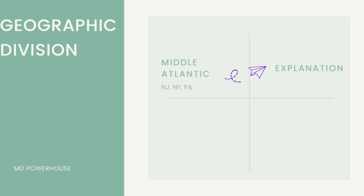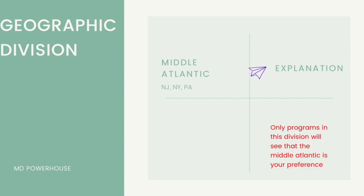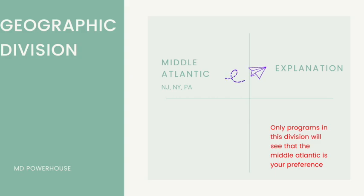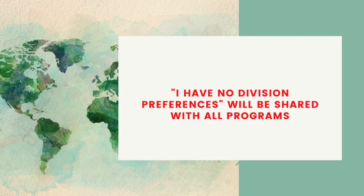It's extremely important to know that only programs in your selected division will see that it is your preference. For example, if you choose the Middle Atlantic division, only programs in New Jersey, New York, or Pennsylvania will see that this is your preference. Some people can think of this as a sort of secondary signaling — programs will see if you are interested in them at the time of application, and if you have a preference for a certain region, all the programs in that region will see it as well. Remember, you have the option to choose 'I have no division preference,' and if you choose that response, it will be shared with all programs you apply to.